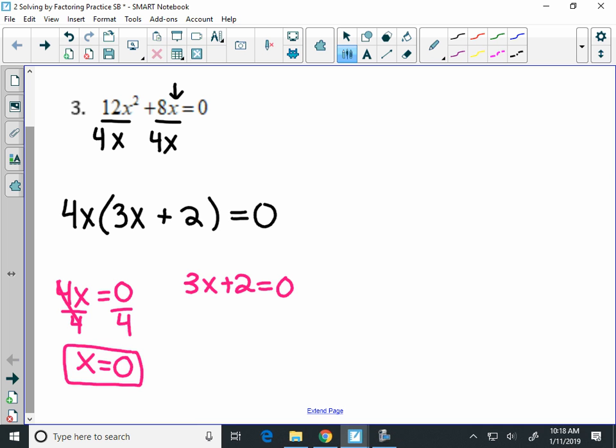Zero is one of your x-intercepts and one of your solutions. On the next one, I subtract 2. I'll get 3x equals negative 2. Divide by 3. And our other solution is negative 2 thirds.